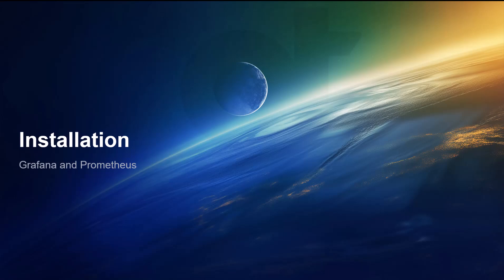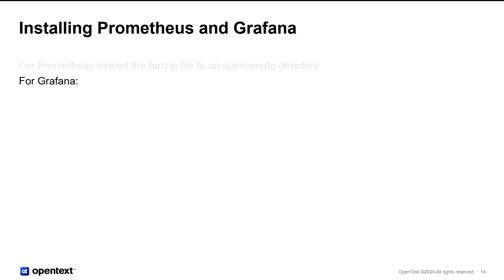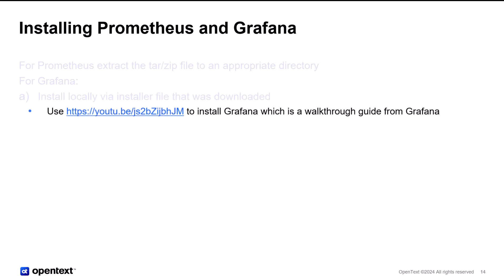Now we'll go over the installation of Grafana and Prometheus. As I stated earlier, for Prometheus, just extract the tar.gz or zip file to the appropriate directory, and then you can run prometheus.exe or prometheus from a command line. It will run in the foreground. You can use some third-party utility to make Prometheus run as a service on Windows. For Grafana, you install via the installer that was downloaded from their website. On the Grafana website, there is a YouTube video walking you through the installation of Grafana, but it is very straightforward.